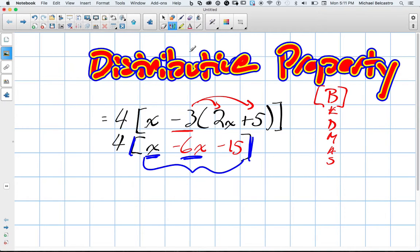And I have like terms, x minus 6x. I can actually simplify that. So we're still left with 4. We still have a square bracket. x minus 6x is negative 5x. I'll write it in blue so we can see what changed. Negative 5x.